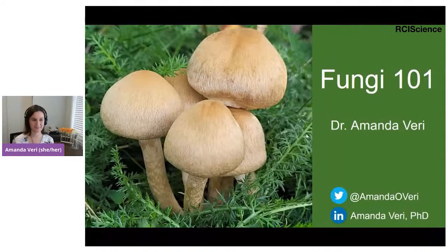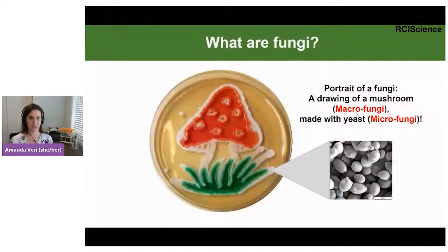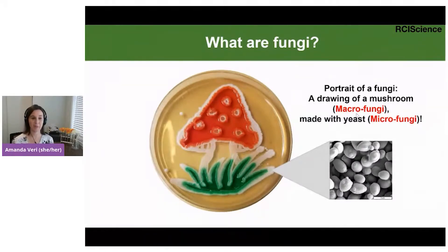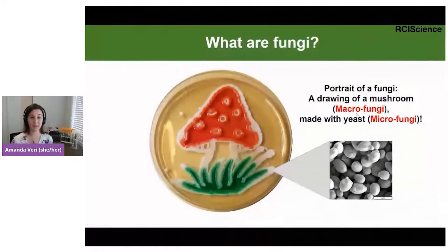When I say fungi, many of you might immediately think of this quintessential fungus — a mushroom that's red with white spots. This is an example of a macro fungi, which is a fungus you can see with your eyes and has a big structure. What's really cool about this picture is that I actually drew the mushroom using a micro fungi, which is a small fungus you can't see with your eye — in this case, baker's yeast.